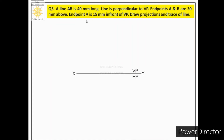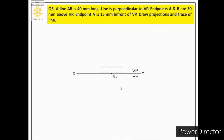The third step is to pick the point about which maximum data is given — that is point A. We mark a reference point on the reference line and call it A0. Endpoint A is 30 mm above HP, so we show this distance on the opposite plane, VP, which is above the reference line. We align the scale vertically and draw a continuous thin line of 30 mm; the end of that projector is the front view of point A, denoted A'.